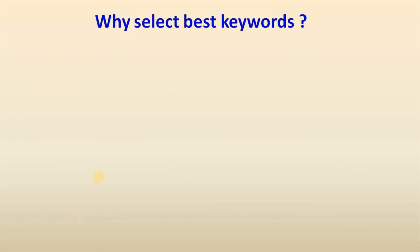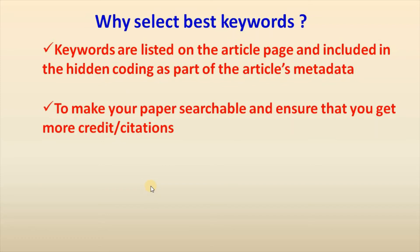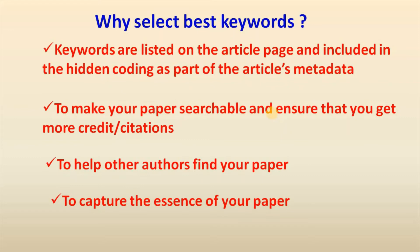Now, why select the best keywords? Keywords are listed on the article page and included in the hidden coding as part of the article's metadata. So it is very essential to select the best keywords. We need to select the best keywords to make our paper searchable and ensure that we get more credits or citations, to help other authors find your paper easily, and also to capture the essence of your paper.